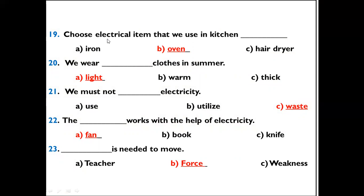Question 19: Choose electrical items that we use in kitchens. Options: A) Iron, B) Oven, C) Hair dryer. The right option is oven. Choose electrical items that we use in the kitchen — oven.